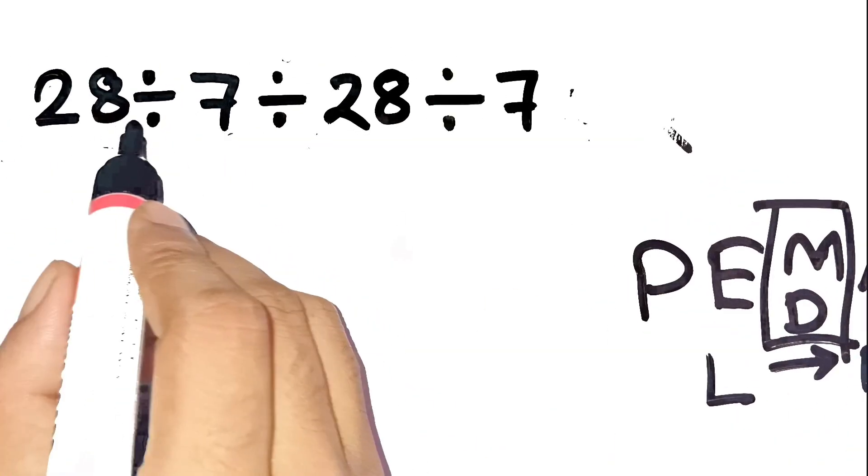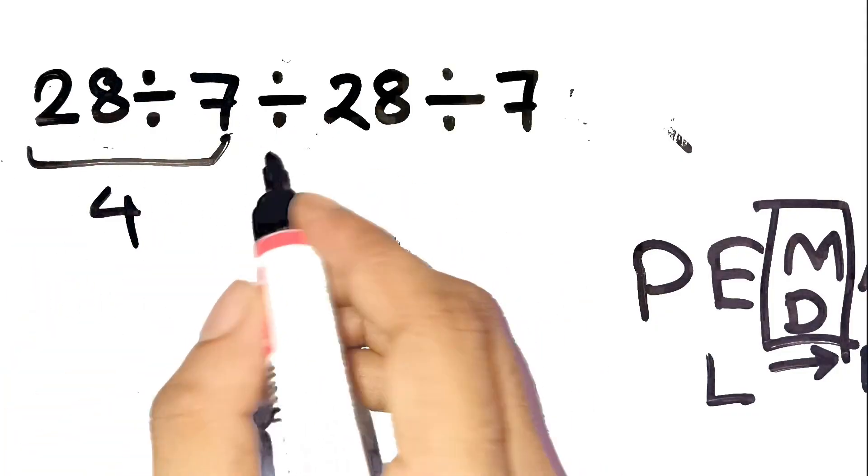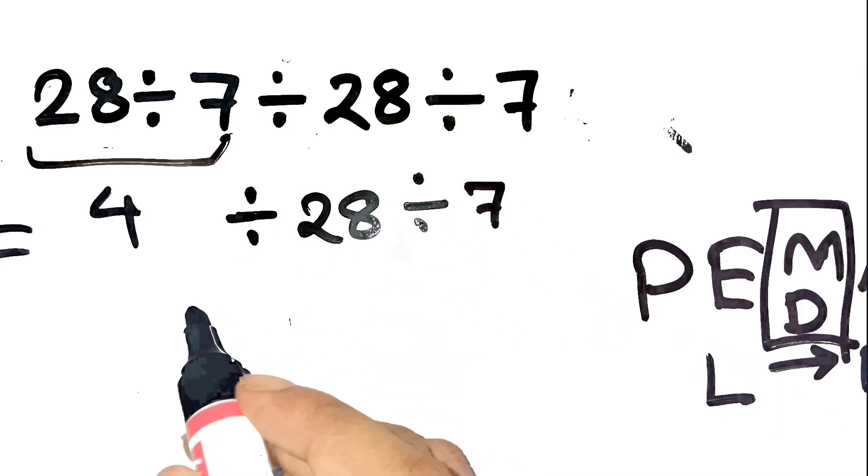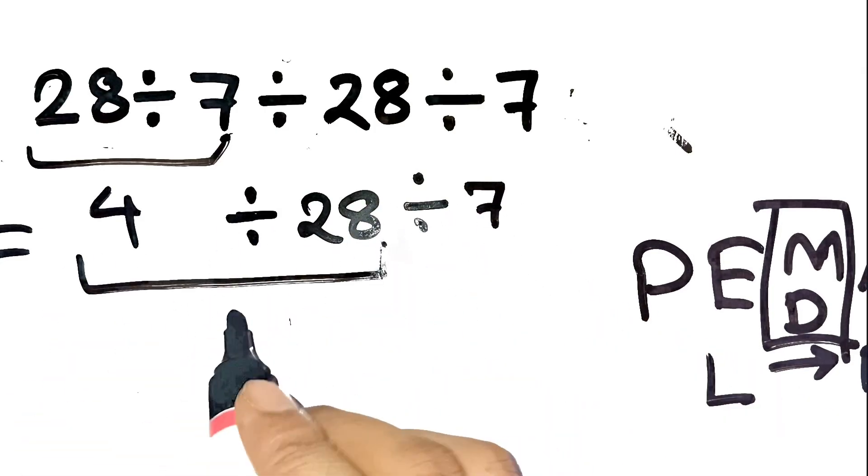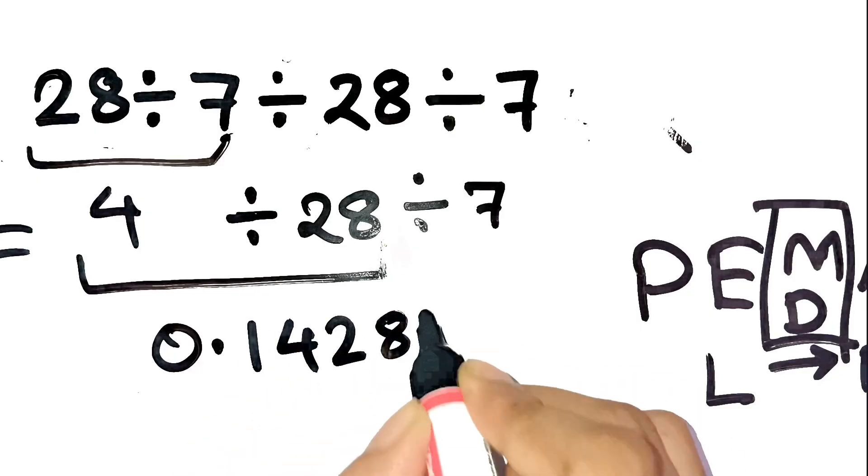So starting from the left, 28 divided by 7 equals 4. Great, now the expression is 4 divided by 28 divided by 7. Next, 4 divided by 28, that's 0.142857.